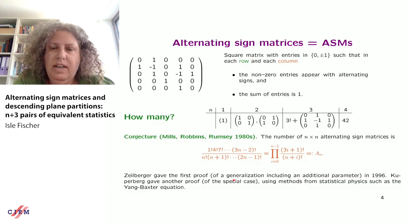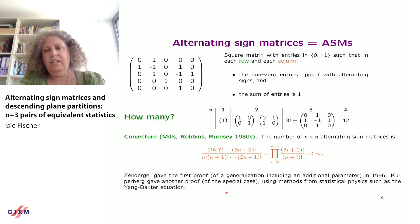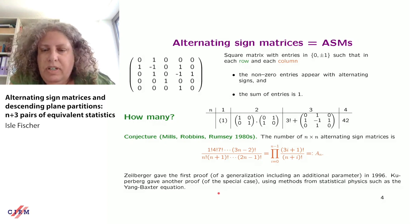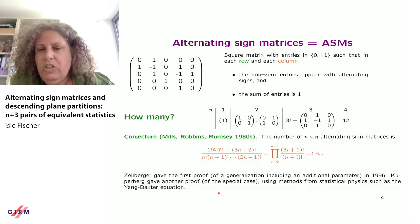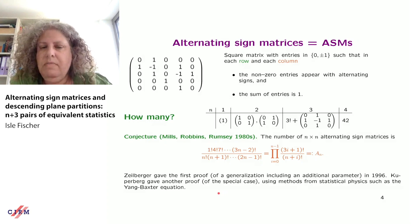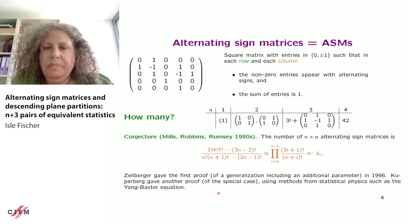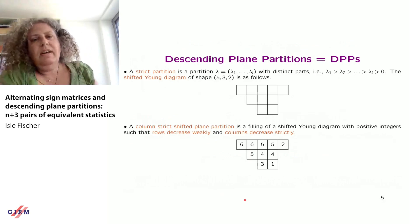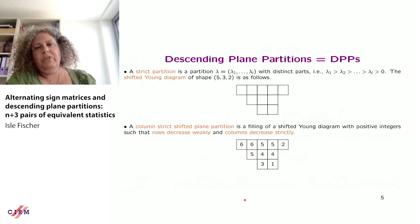Doron Zeilberger was the first to prove that conjecture — actually a generalization with an additional parameter. Later in the same year, Kuperberg gave another proof of the special case using methods from statistical physics involving the famous Yang-Baxter equation.